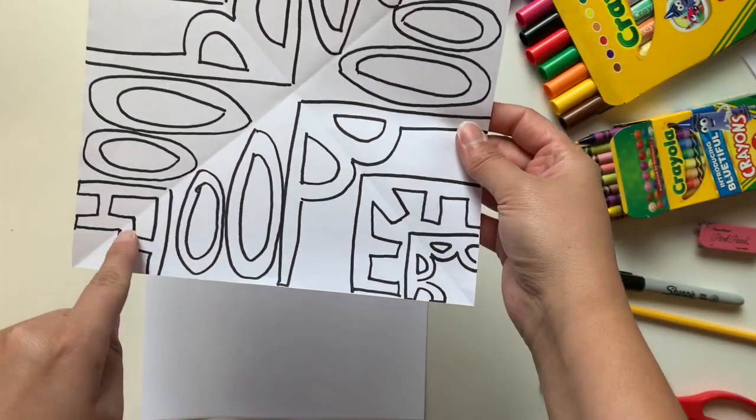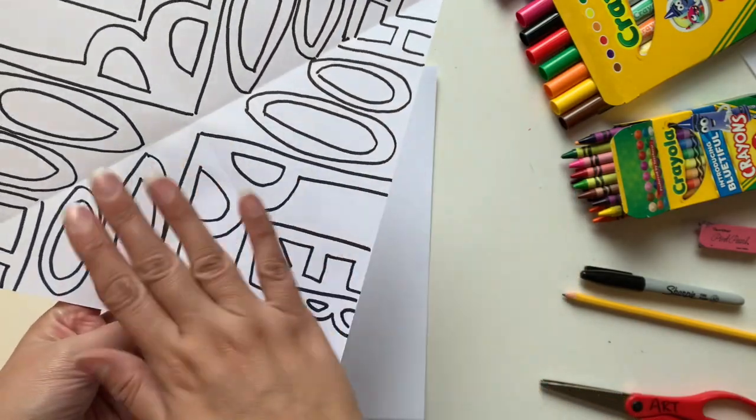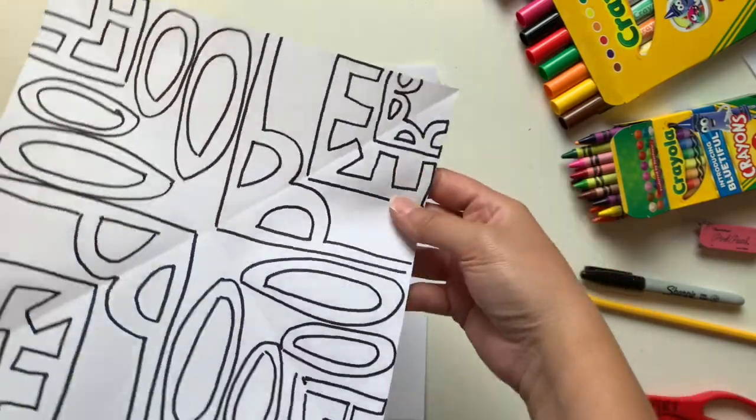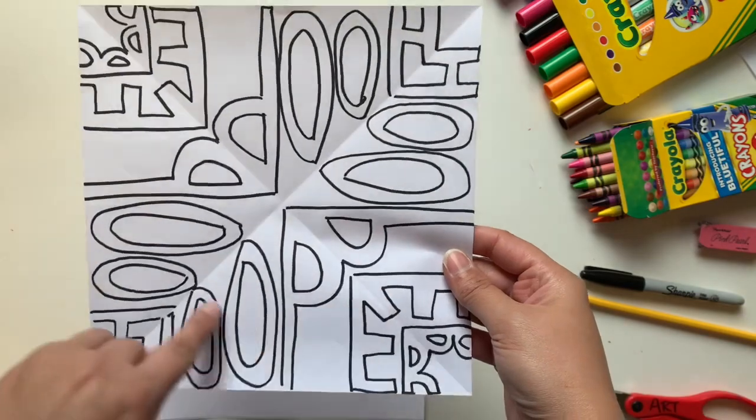If you can look really closely, you can see that this is my name Hooper, H-O-O-P-E-R. But I've created a mirror image of it over here and then again flipped over here and again over here. And that creates a really awesome radial design.